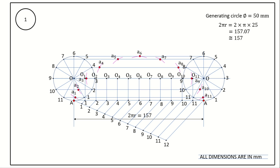Join all points A, A1 through A11, and A by a smooth curve. If all points form a smooth curve, darken it. First darken the generating circle, then darken the curve traced by point A. This curve is called the cycloid.